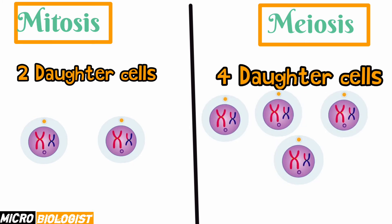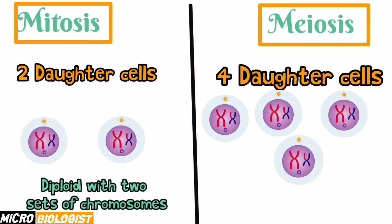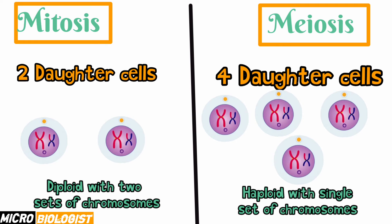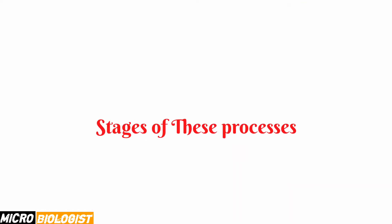There is a remarkable difference we haven't discussed yet — the chromosomal number of daughter cells. In mitosis, daughter cells are diploid with two sets of chromosomes, while in meiosis, daughter cells are haploid with only a single set of chromosomes. These are called gametes, having exactly half the number of the parent's chromosomes. Additionally, daughter cells produced by mitosis are exactly identical to each other, but in meiosis all daughter cells are different from each other.